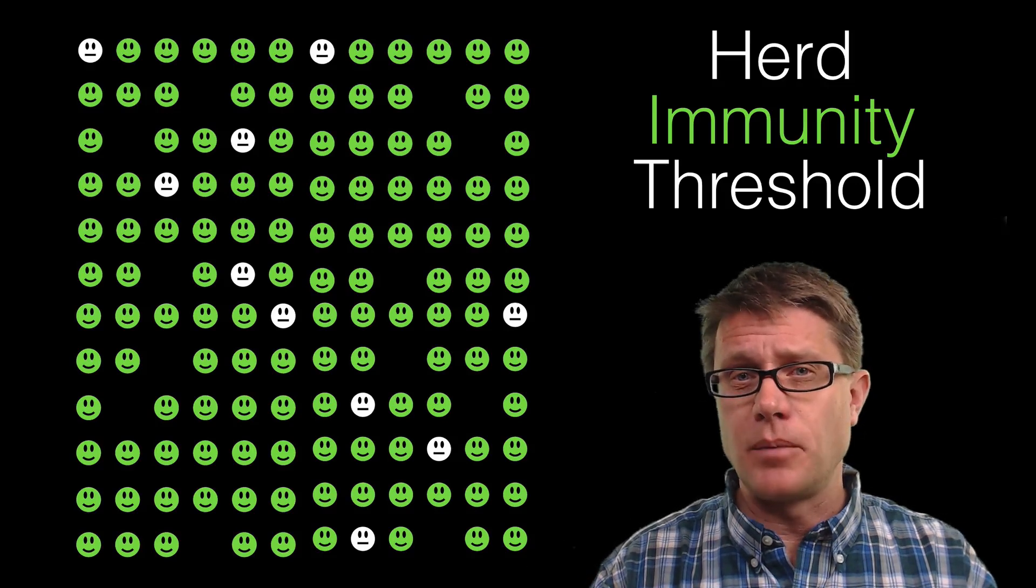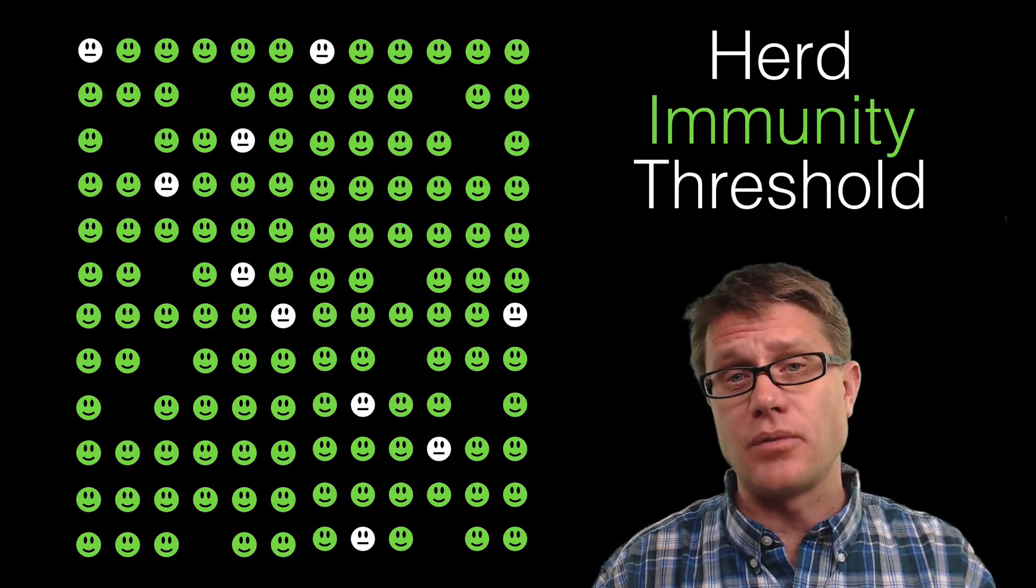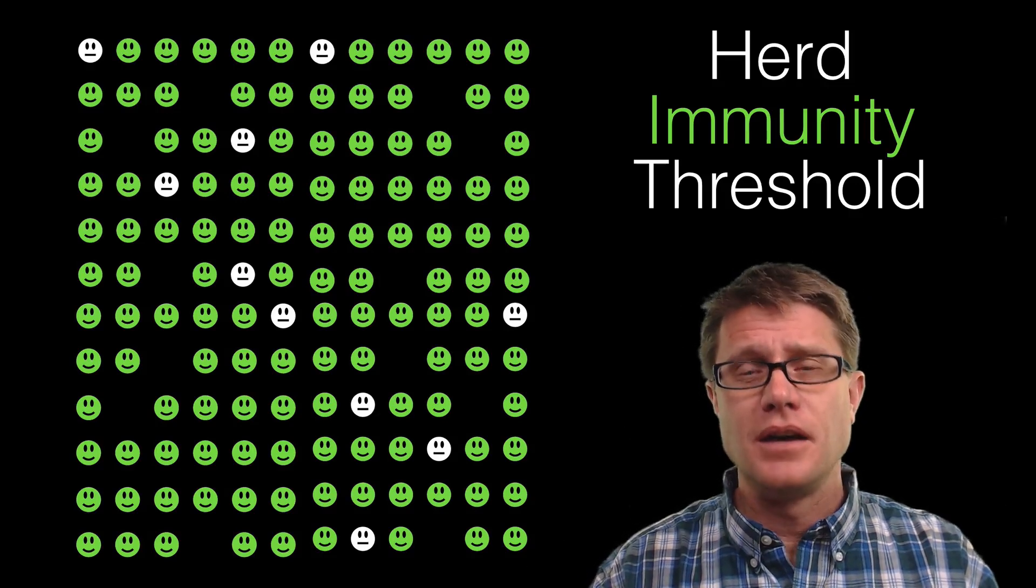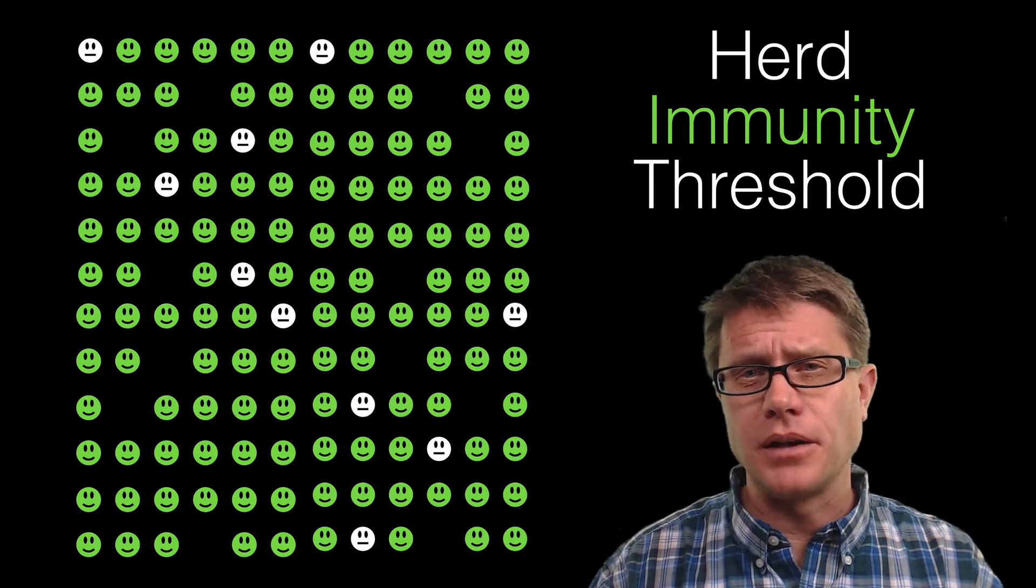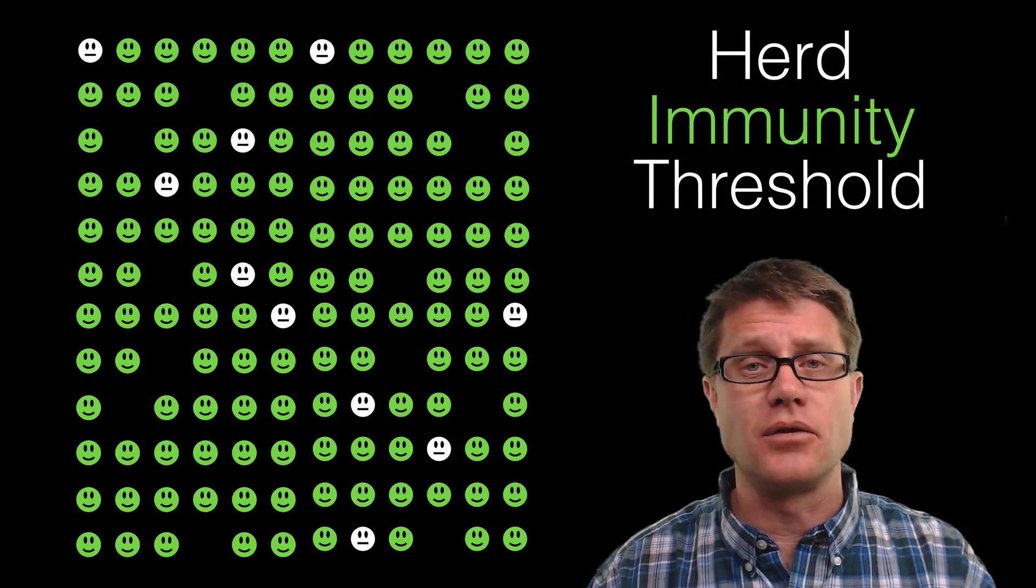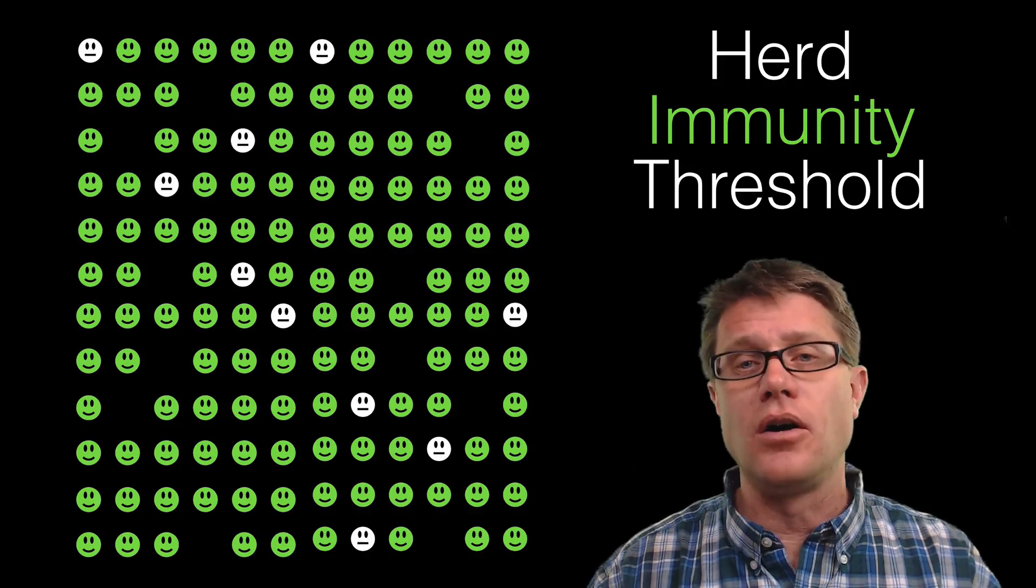And so what scientists have come up with is a herd immunity threshold. What does that mean? It's how good is good enough? What percent of our population do we have to have vaccinated or immune to the disease so we all get this herd immunity?